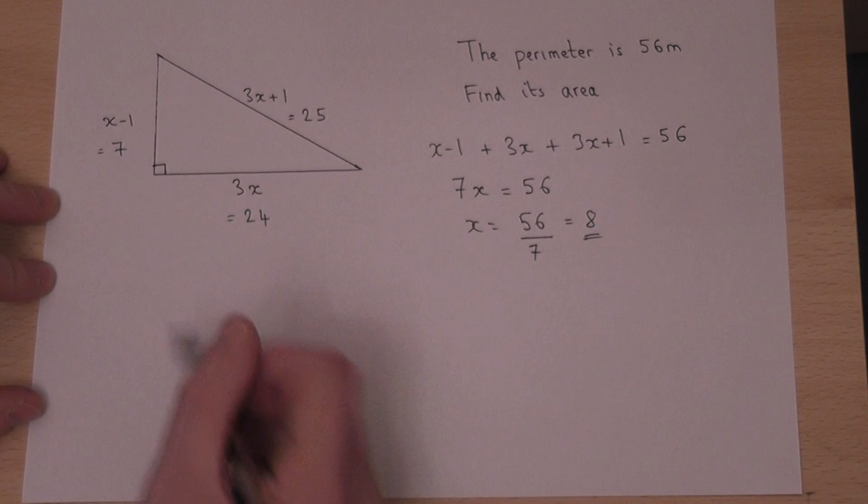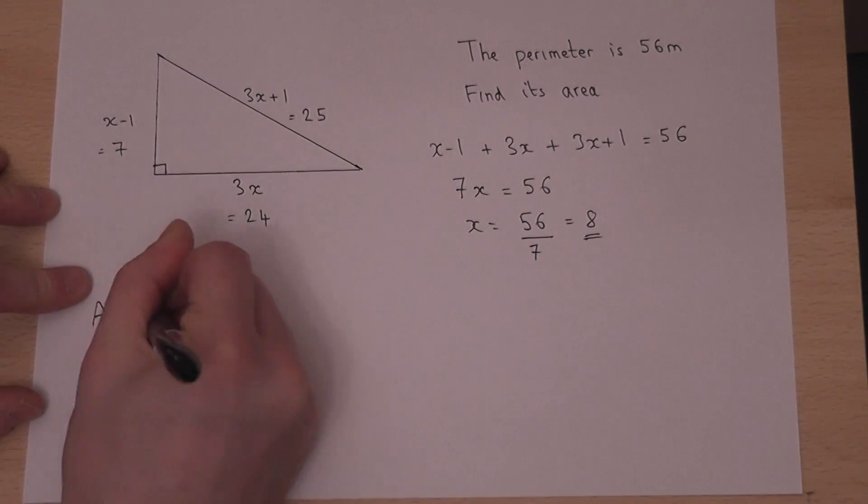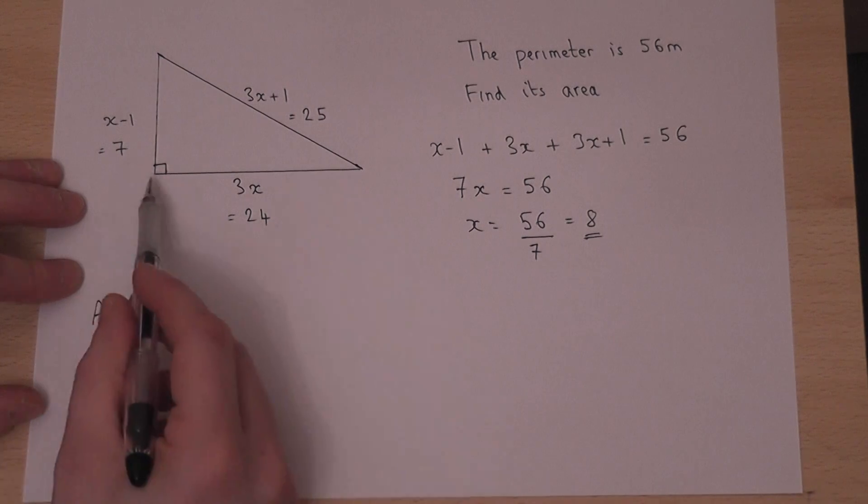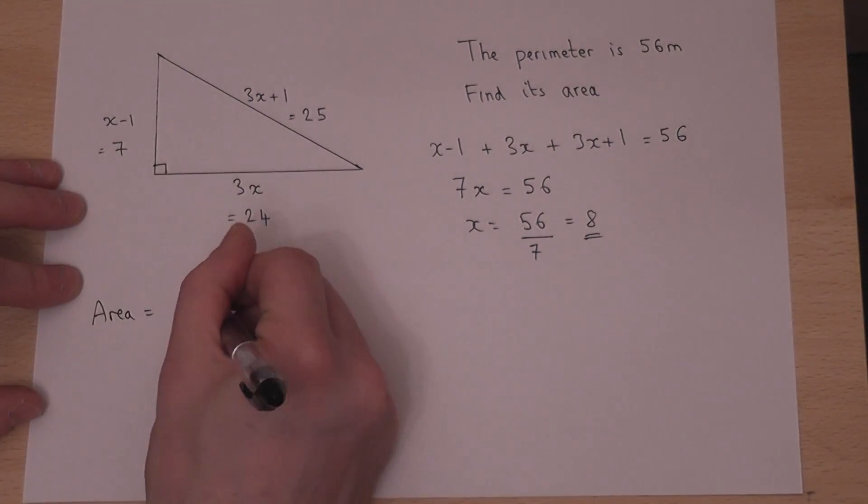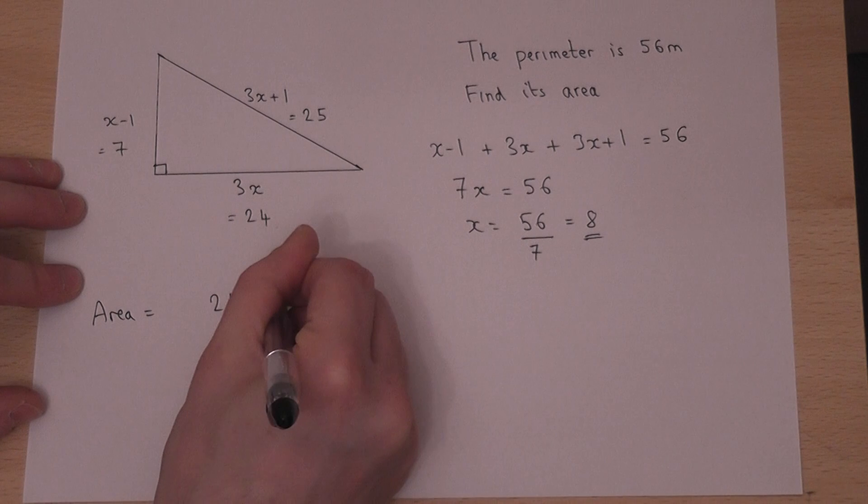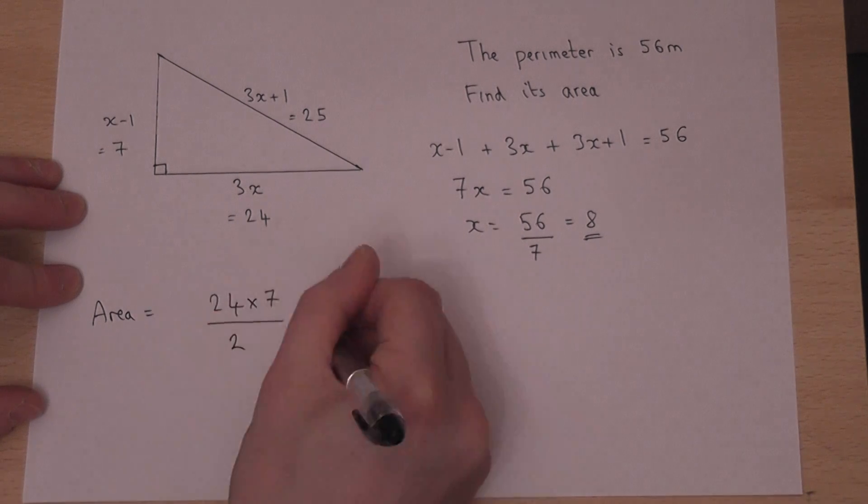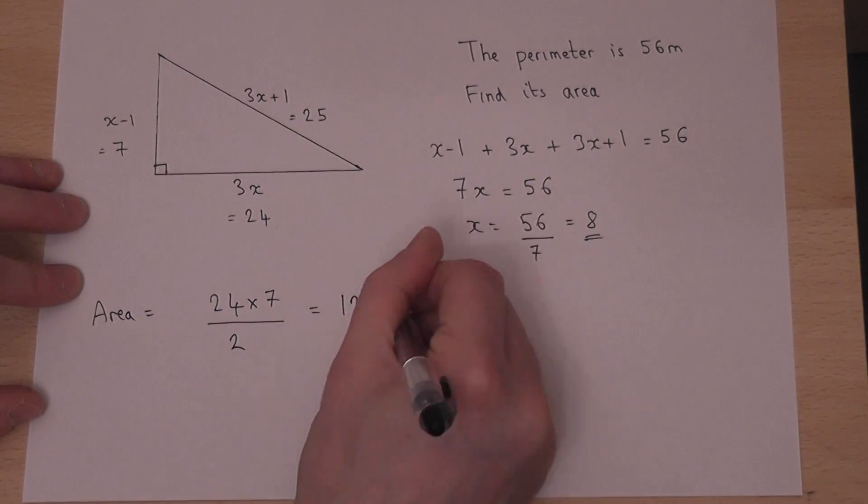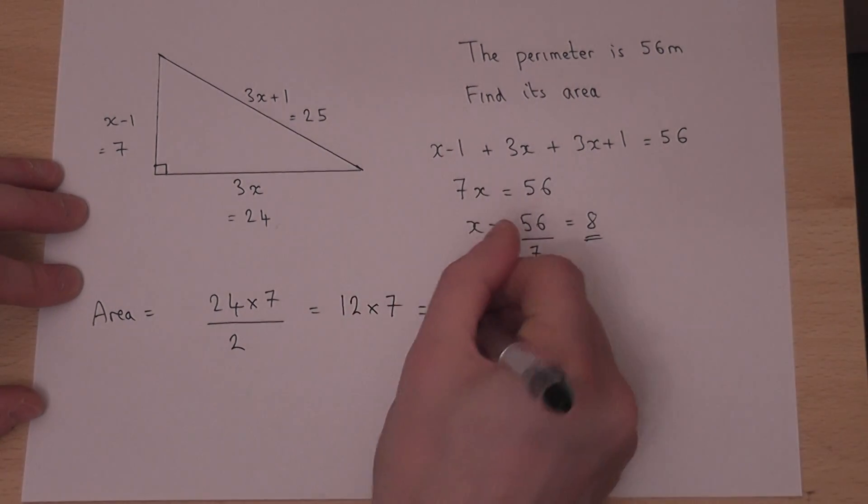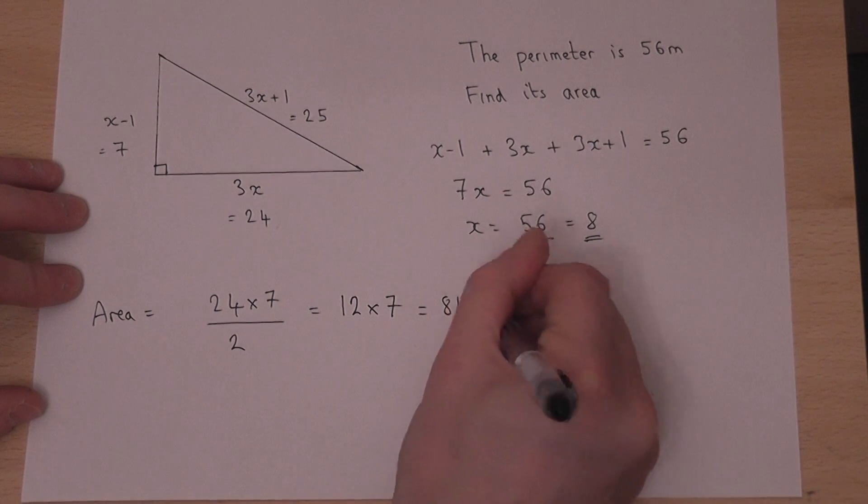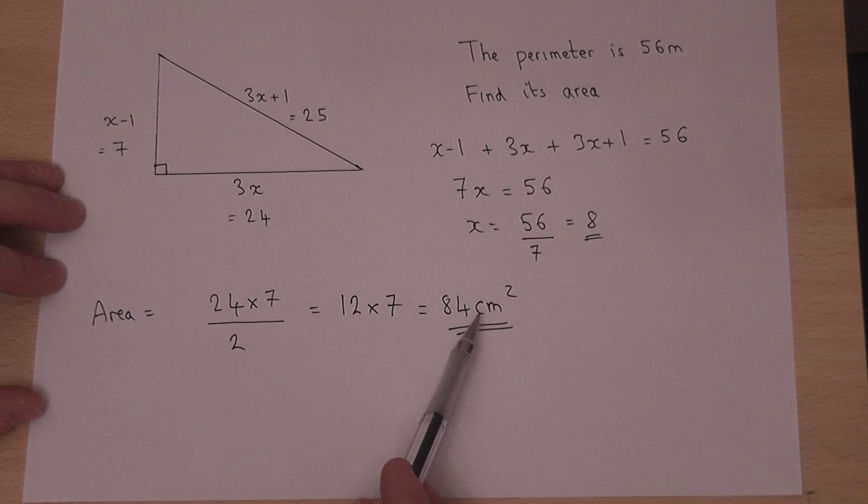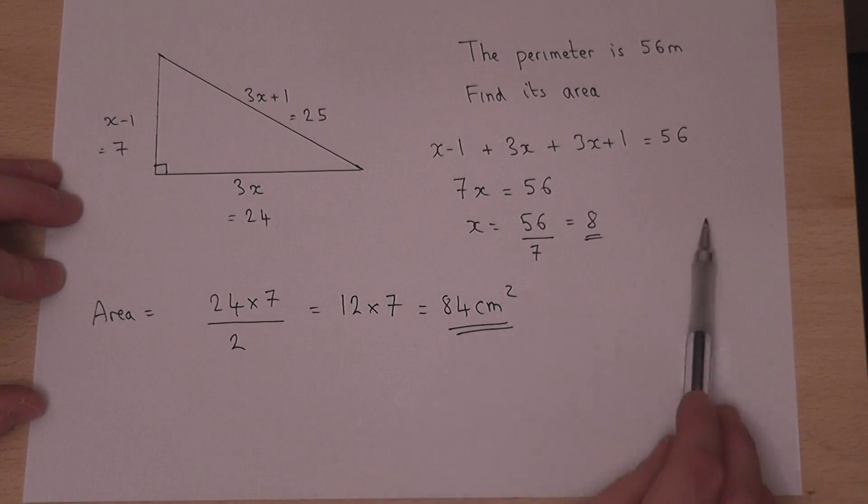And to find the area, we just have to work out a half of the base times the height. So the base times by the height, halved. Well, a half of 24 is 12, so 12 times 7, which is just 84 centimeters squared. So the area of the triangle is 84 centimeters squared.